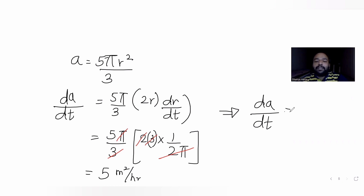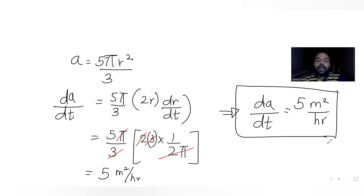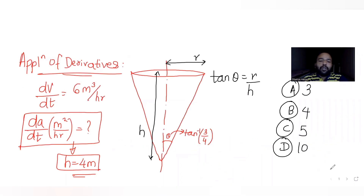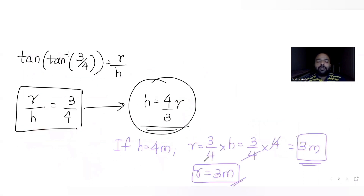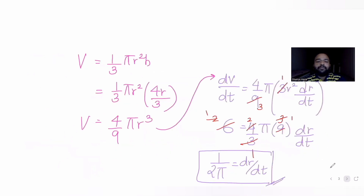We get dA/dt as 5 square meters per hour. The option that matches is option C, which is the correct answer. To recap: when height is 4 meters, radius came out to be 3 meters. We used the volume formula (1/3)πr²h and differentiated with respect to time to get dr/dt equals 1/(2π).